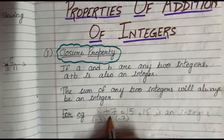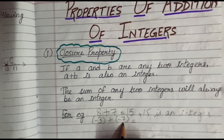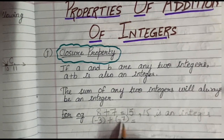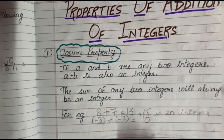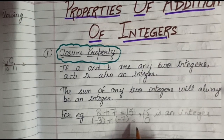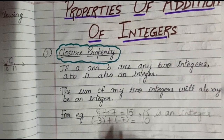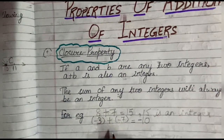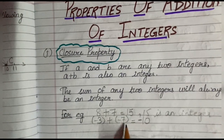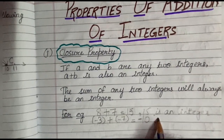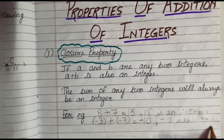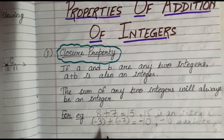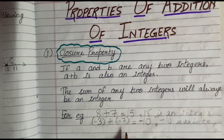Let us take one more example with two integers minus 3 and minus 7 and find their sum. Since both integers are negative, we will add 3 and 7 to get 10, and the common sign is minus, so the answer is minus 10. Minus 3 is an integer, minus 7 is an integer, and minus 10 is also an integer. So we learnt that on adding any two integers we will always get an integer. Hopefully the closure property is clear to you.